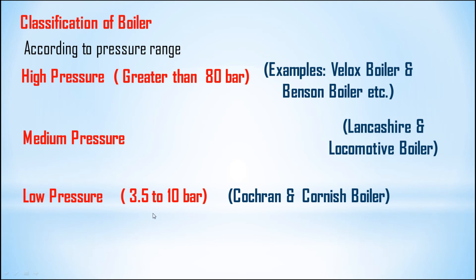The range for low pressure boilers is 3.5 bar to 10 bar, and for high pressure boilers the pressure range is greater than 80 bar. If the range falls between these two, it is called a medium pressure boiler. So we can classify boilers according to their pressure range.